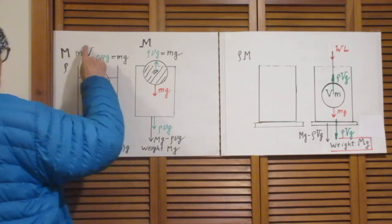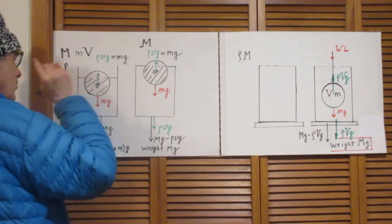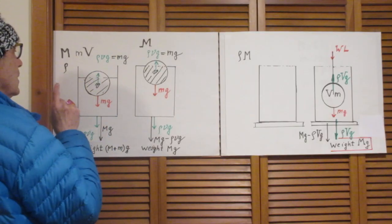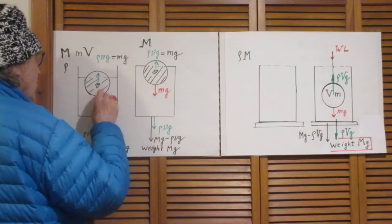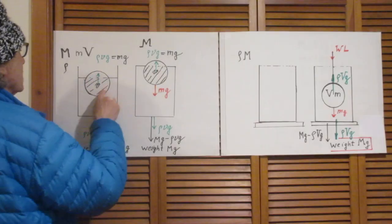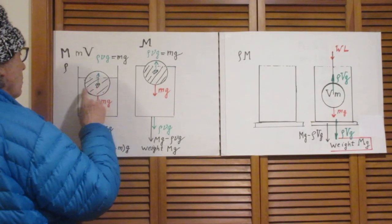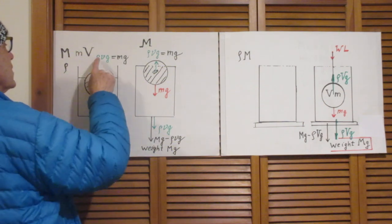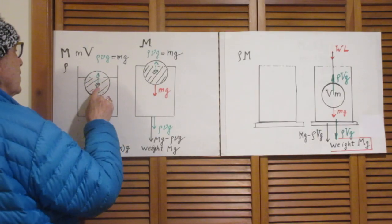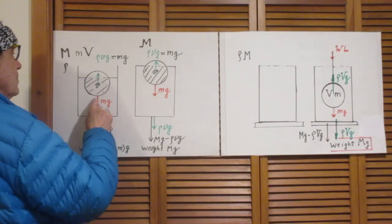Now I take an object with volume capital V and mass little m, and it will float. I lower it gradually into this liquid. The buoyant force upwards will be exactly equal to the gravitational force down when the net force on the system is zero. The volume of this object that is inside the liquid is not capital V — that is little v. The buoyant force, according to Archimedes, is ρvg, because ρ is the density of the liquid. So ρv is the mass of the liquid displaced by this object, and this ρvg must equal mg.